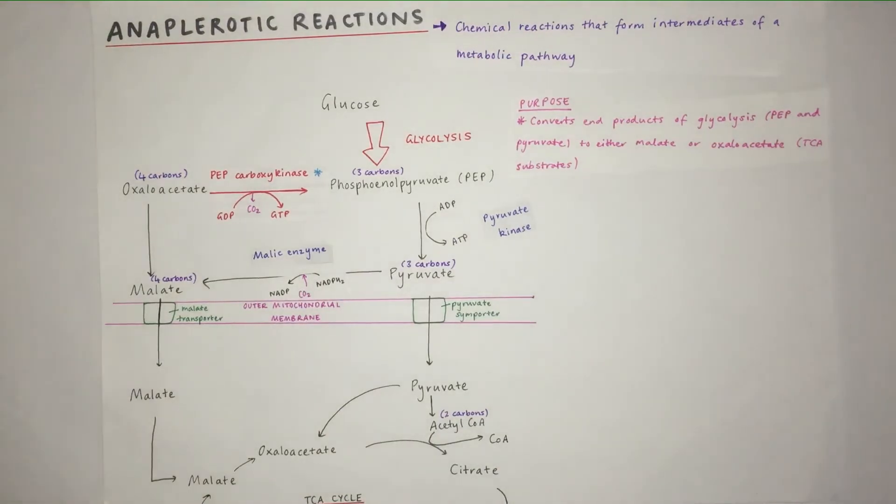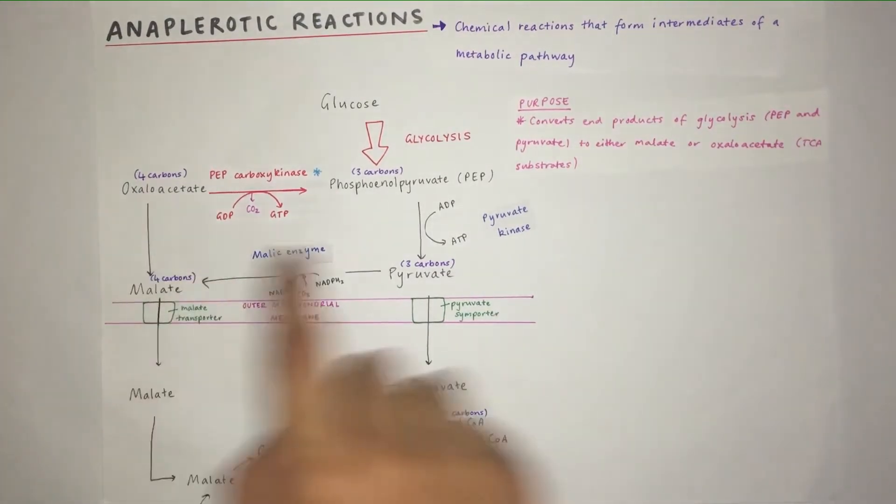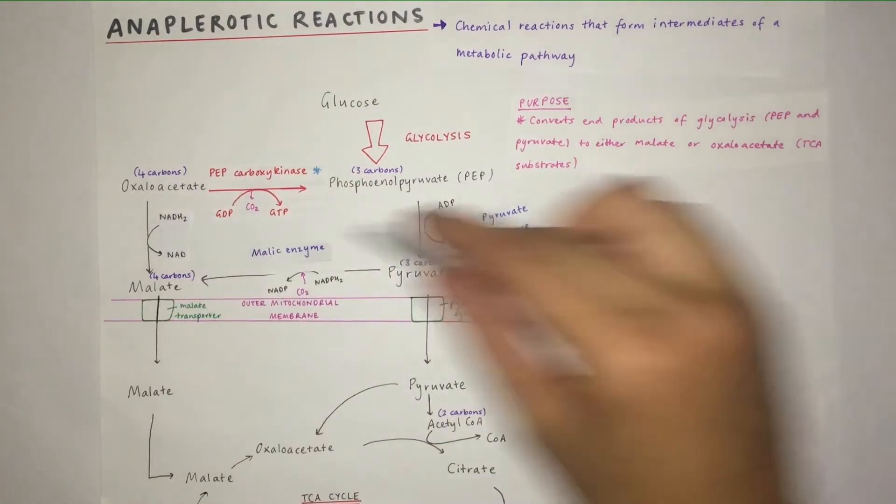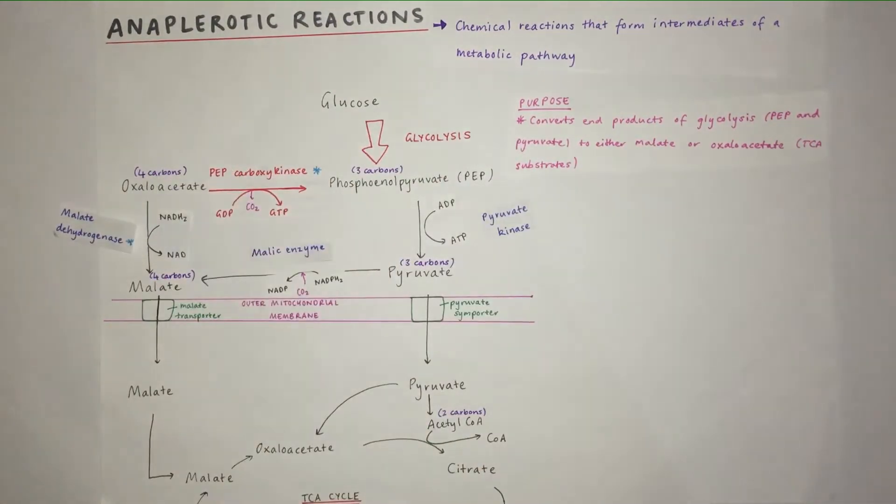Furthermore, we've got up here oxaloacetate becoming malate, and the enzyme that catalyzes this is malate dehydrogenase. NADH becomes NAD. So we've got the anaplerotic reactions in the cytosol.